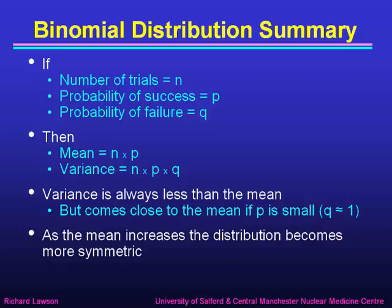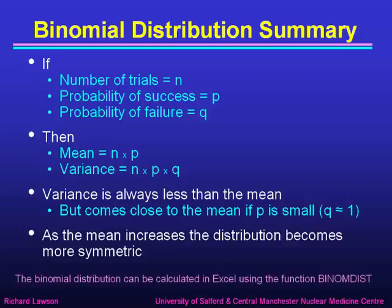Those are the properties of the binomial distribution, and we'll see how those can be used in later examples. If you want to plot the binomial distribution yourself, Excel has a function called BINOMDIST, which will work out the binomial distribution for any value of n and p. That brings us to the end of the second part of this lecture on probability distributions. In the next part, I'll look at the Poisson distribution.